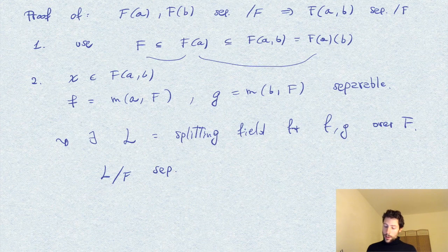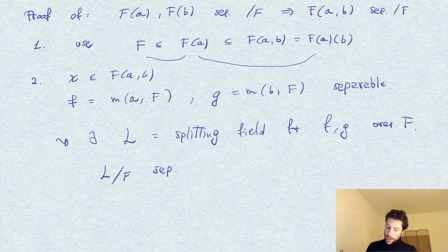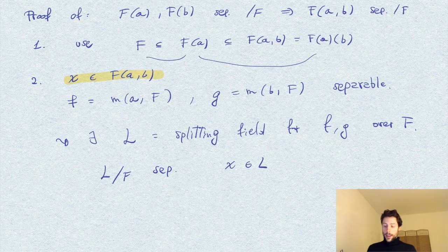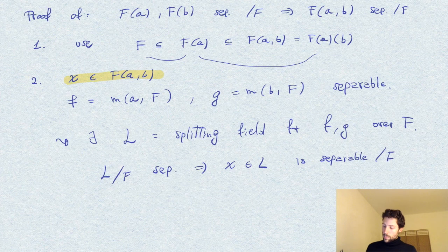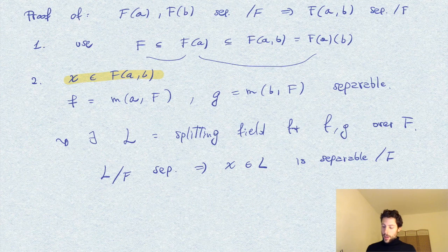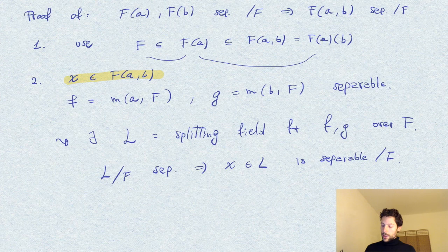And our element X here, of which we want to show this is separable, of course, we can think of it as an element in L, and therefore, is separable. Okay, so, this is another argument that doesn't use the transitivity for finite extension, maybe a simpler way to do this. Okay.